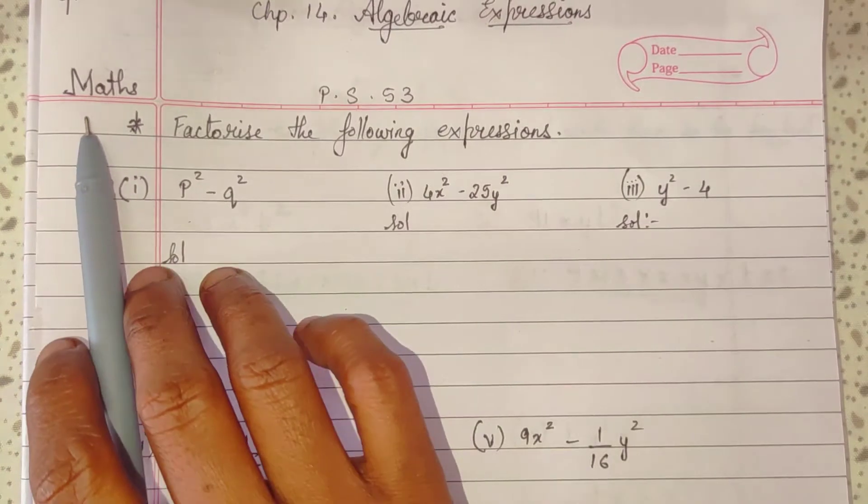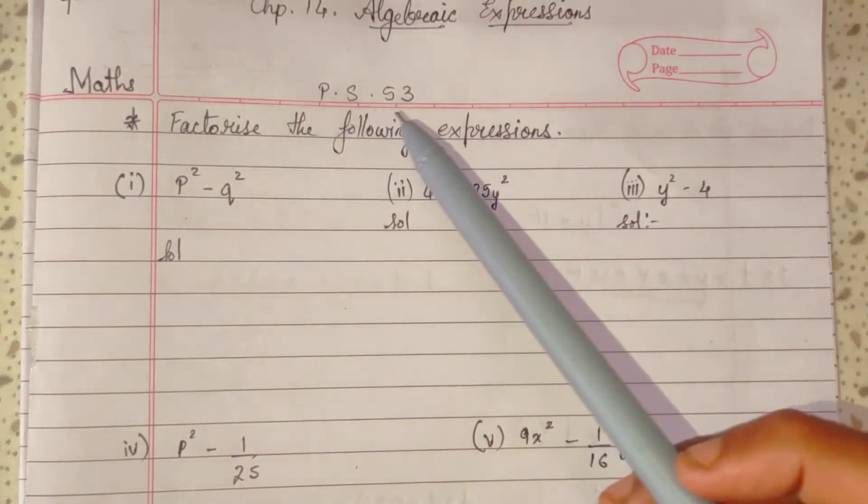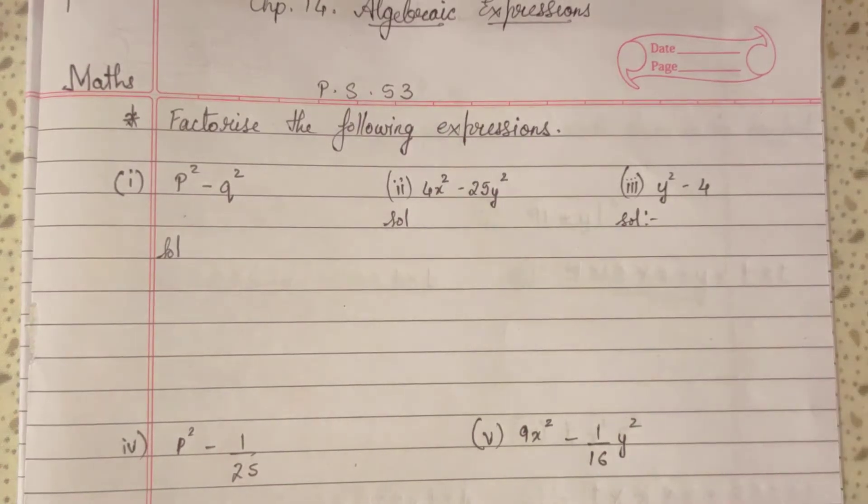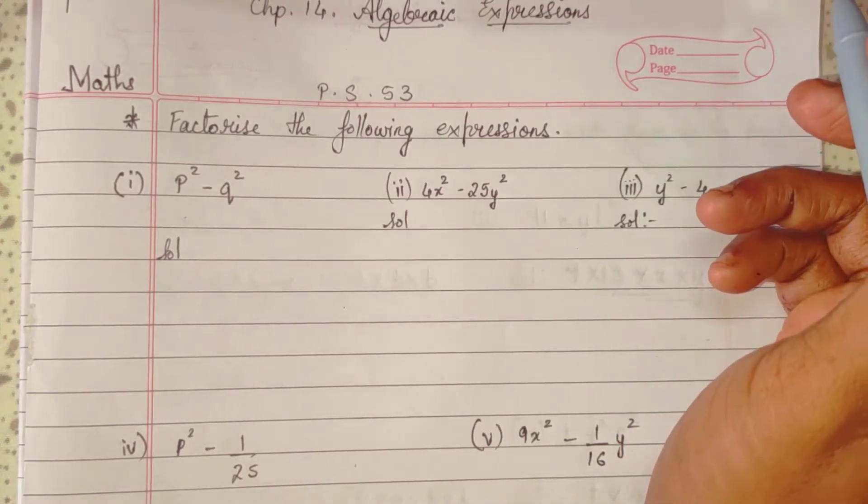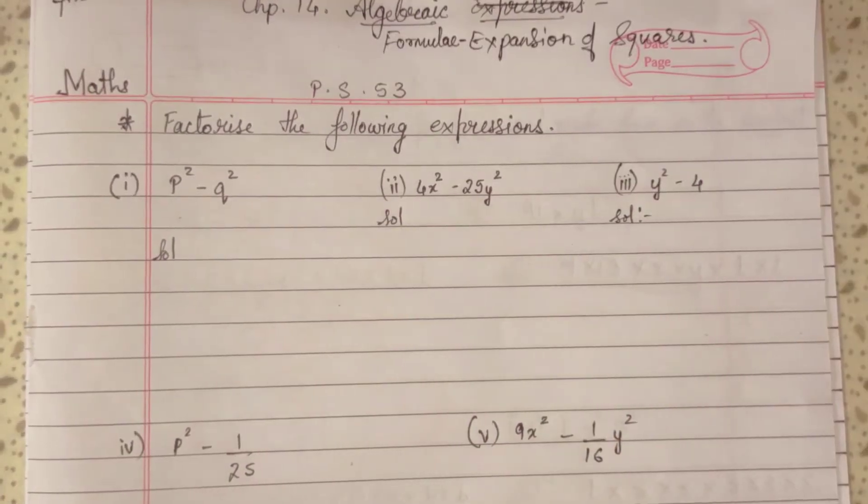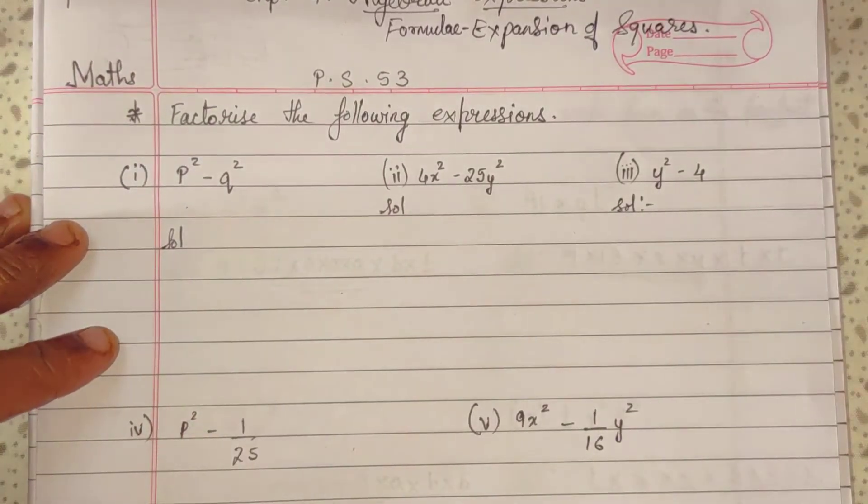Standard 7th Maths Chapter 14 Algebraic Expression Practice Set 53. Factorize the following expressions. First one.